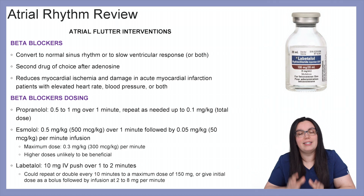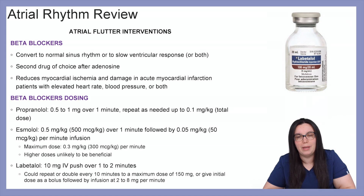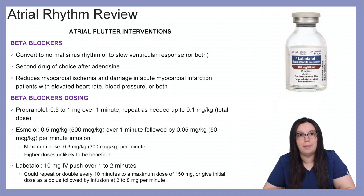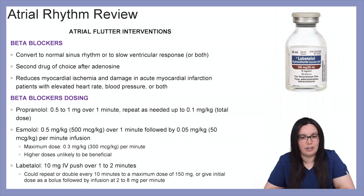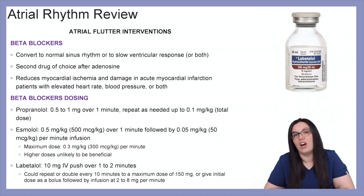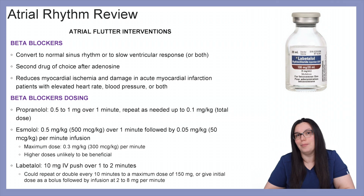Beta blocker dosing differs by medication. Propranolol can be 0.5 to 1 milligram over one minute, repeated as needed up to 0.1 milligrams per kilogram total dose. Esmolol is 0.5 milligrams per kilogram over one minute, followed by 0.05 milligrams per kilogram per minute for infusions; the maximum dose is 0.3 milligrams per kilogram per minute. Labetalol can be given 10 milligrams IV push over one to two minutes, repeated or doubled every 10 minutes to a maximum dose of 150 milligrams, or given as a bolus followed by an infusion at 2 to 8 milligrams per minute.